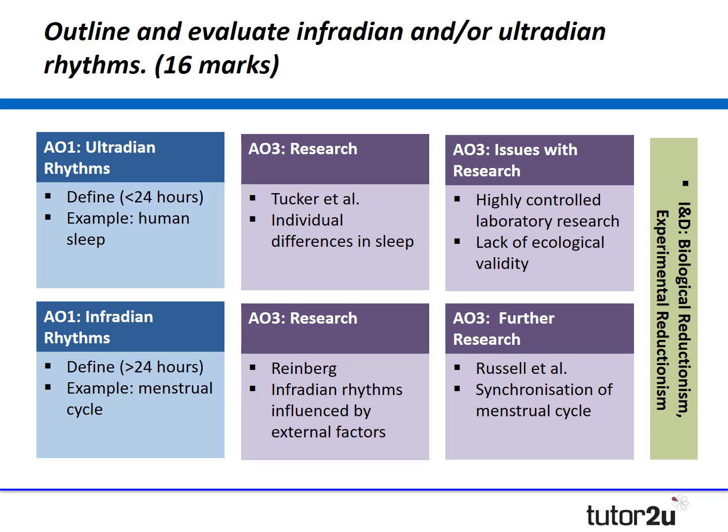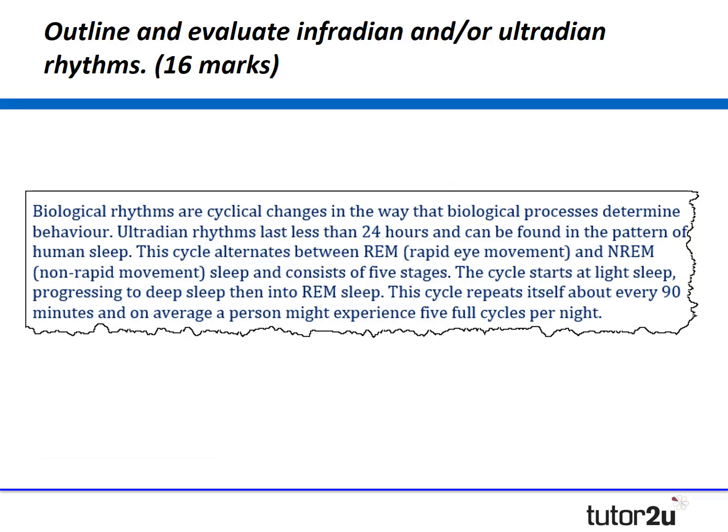Let's see what this looks like in principle, starting with the outline of the ultradian rhythm. Remember this is only going to be half of our AO1 and therefore we might be looking to write around 75 to 80 words instead of the full 150 here.